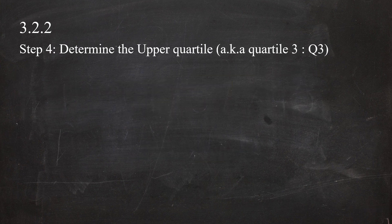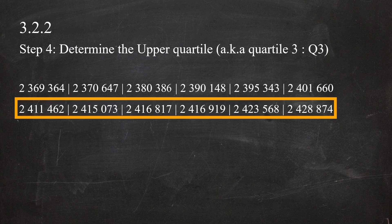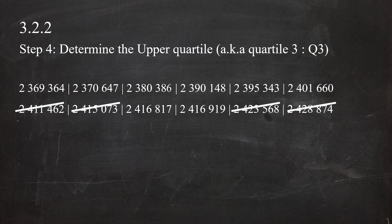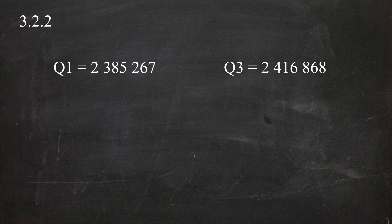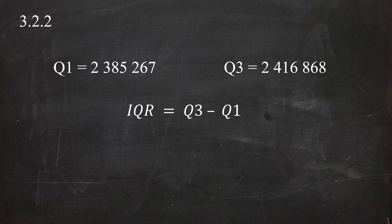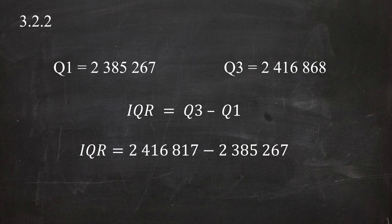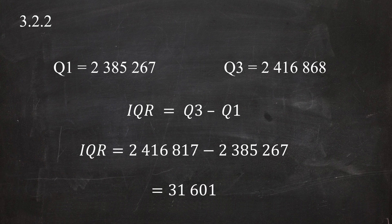Next, determine the upper quartile, Quartile 3, by finding the median of the upper half of the data set. Eliminating values from both ends leaves two values remaining. Quartile 3 is therefore 2,416,817 plus 2,416,919 divided by 2, giving 2,416,868. Now that we have Quartile 1 and Quartile 3, the interquartile range equals Quartile 3 minus Quartile 1, which gives an interquartile range of 31,601.